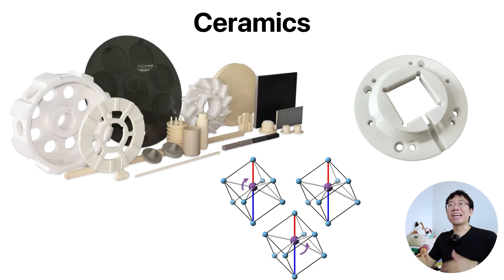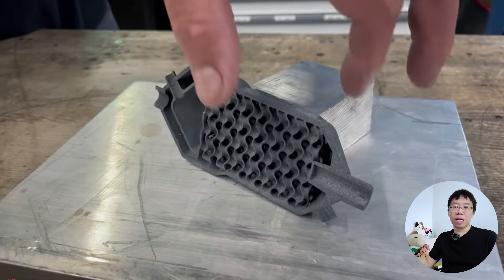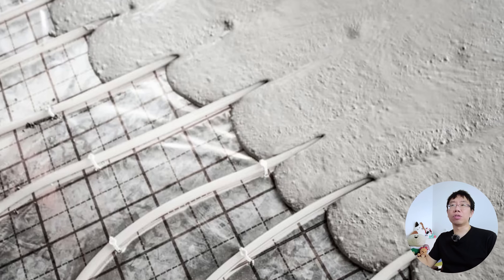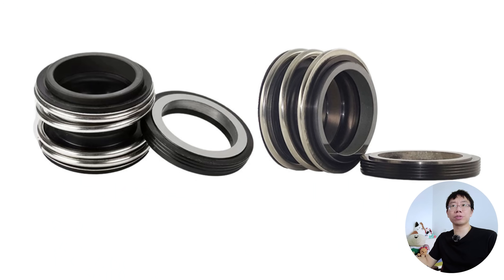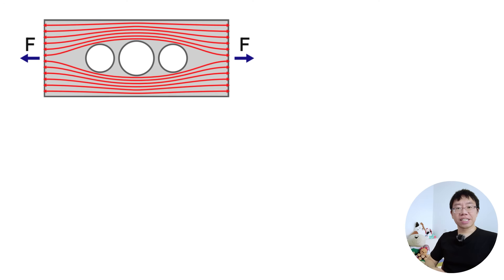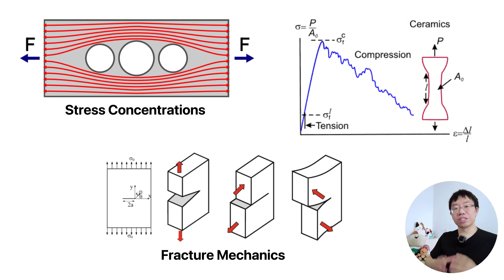Ceramics and glasses offer exceptional stiffness, thermal stability, wear resistance, and chemical inertness, but suffer from zero ductility. In mechanical design, we use them for specialized applications like alumina for high-voltage insulators, silicon carbide for seal faces in pumps, or tungsten carbide for the cutting edges of end mills. The successful use of ceramics depends on controlling stress concentrations, understanding fracture mechanics, and designing for compression rather than tension.